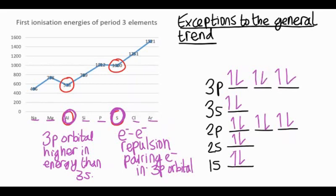So it's important to know the reasons for this general trend in ionization energy. But you also need to know and explain the reasons for these very important exceptions, too.